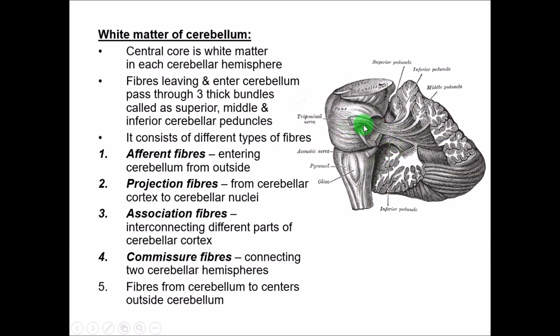The middle cerebellar peduncle connects the cerebellum to the pons. The superior cerebellar peduncle connects the cerebellum to the midbrain. The inferior cerebellar peduncle connects the cerebellum to the medulla oblongata. These three peduncles hold the cerebellum in its position. The fibres entering the cerebellum from different parts of the brainstem are called afferent fibres.